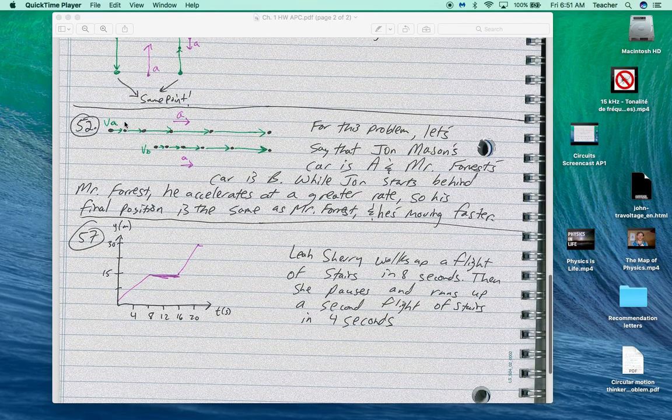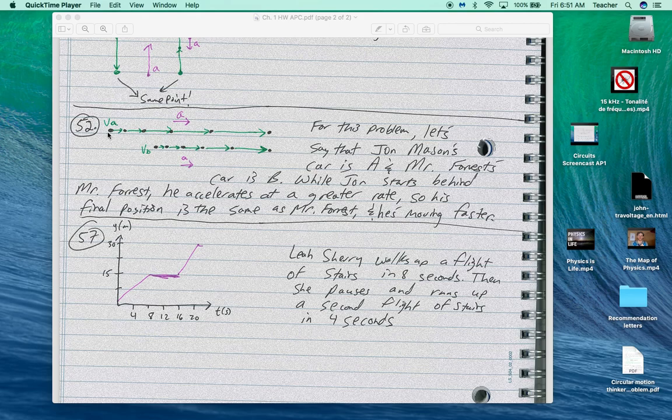Sorry, Nathan. These are two motion maps. They said they think that they started at the same time. So notice we're at two different positions. My story is that this problem, John Mason's car is A, Mr. Forrest's car is B.